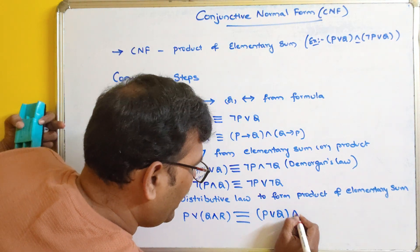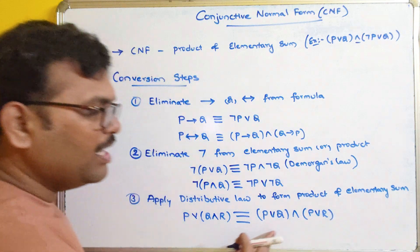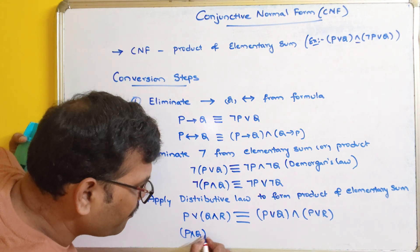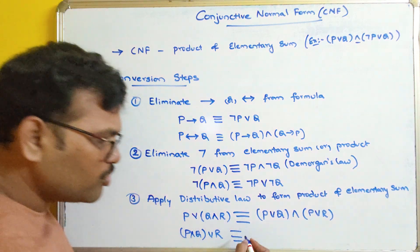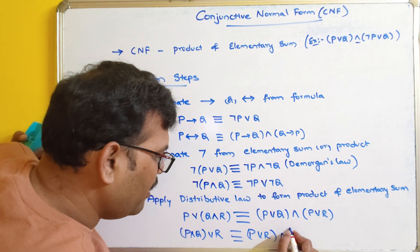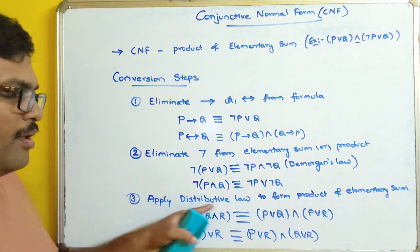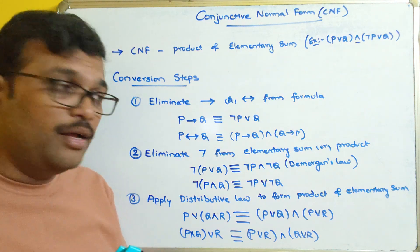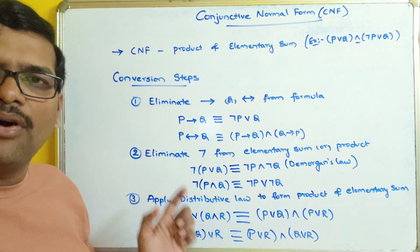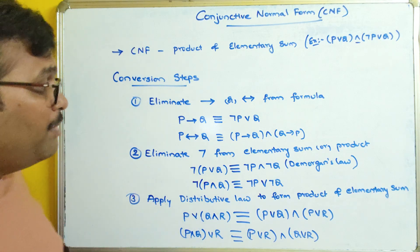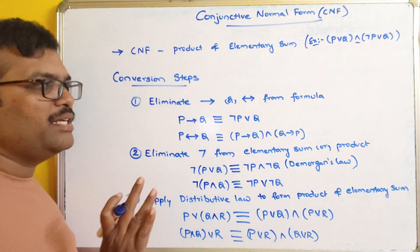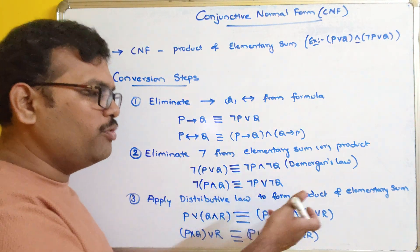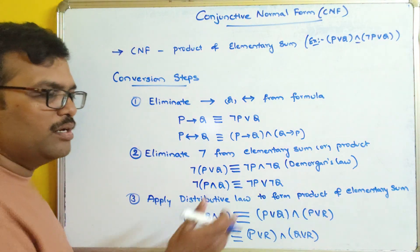You can use any law of logic in order to convert the formula into CNF whenever it is required. But mainly: first, eliminate the implies — that is the conditional and bi-conditional. Second, eliminate the negation from either elementary sum or product. And third, apply the distributive law to form the product of elementary sums, because the distributive law itself gives the product of sums.